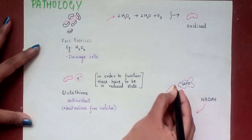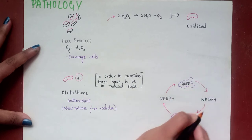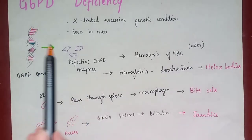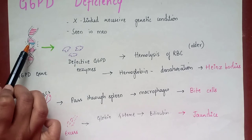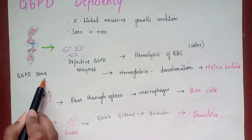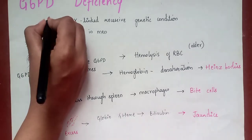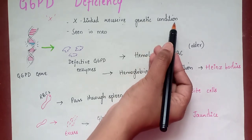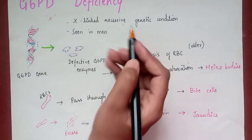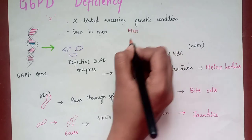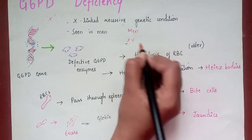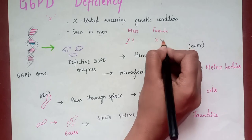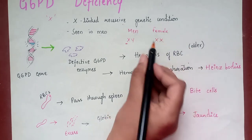NADP+ should be converted back into NADPH, which is done by our today's hero, G6PD. G6PD deficiency is due to a mutation in the G6PD gene, which is present on the X chromosome — hence it is called an X-linked recessive genetic condition. It is predominantly seen in men, since men have X and Y chromosomes; if the X is defective, that leads to the condition. In females, there are two X chromosomes, so if one is mutated the other compensates.